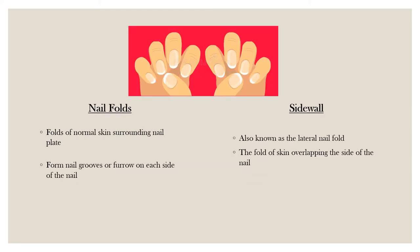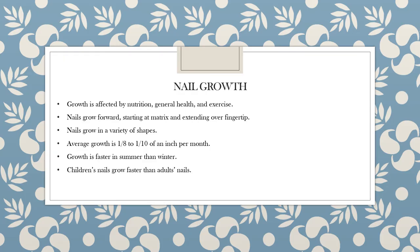Nail folds are folds of normal skin surrounding the nail plate. They form nail grooves or furrows on each side of the nail. The side wall, also known as the lateral nail fold, is the fold of skin overlapping the side of the nail. A normal nail grows forward from the matrix and extends over the tip of the finger.